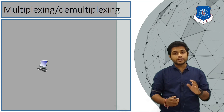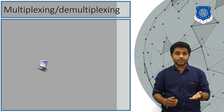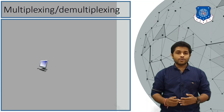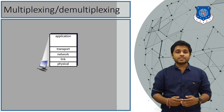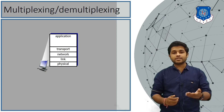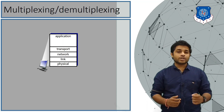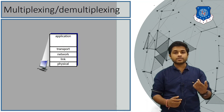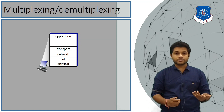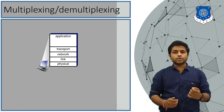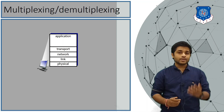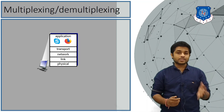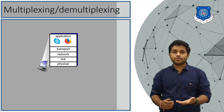Suppose the device you are seeing on the screen is your computer. Every computer has five layers — the TCP/IP layers — which are physical layer, data link layer, network, transport, and application layer. Suppose you have opened two applications in the application layer: Skype and the Firefox browser.